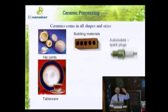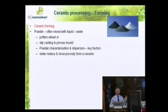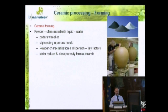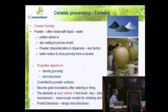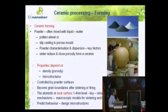Ceramic processing — we've already had a whole day introduction to this. Ceramics come in all shapes and sizes, be they hip joints or the electronic circuits in our telephones. The powder and the processing are key. We can take our simple potter's wheel, mix powders with water, make a piece, cast. Powder characterisation and dispersion are key factors. We put these together, sinter, reduce porosity, and form a ceramic. These properties depend on density and microstructure.